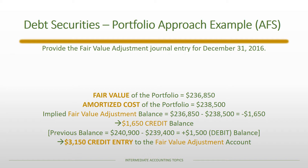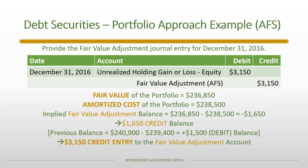We have to compare this balance to the previous balance. Going back to December 31st, 2015, the previous balance would have been a $1,500 debit balance. Going from a $1,500 debit balance to a $1,650 credit balance means there needs to be a $3,150 credit entry to the fair value adjustment account. From that we derive the entry to the unrealized holding gain or loss account — because this is available for sale, it is part of accumulated other comprehensive income, a permanent equity account.